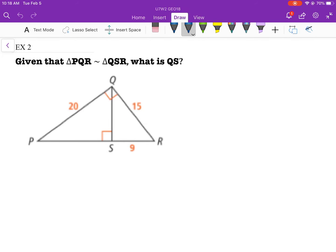Given that triangle PQR is similar to triangle QSR, what is QS? So PQR is similar to QSR. What is QS? This is what we're trying to find.